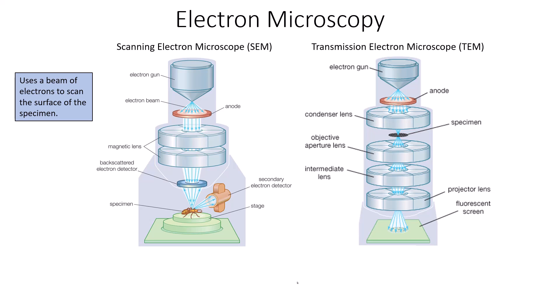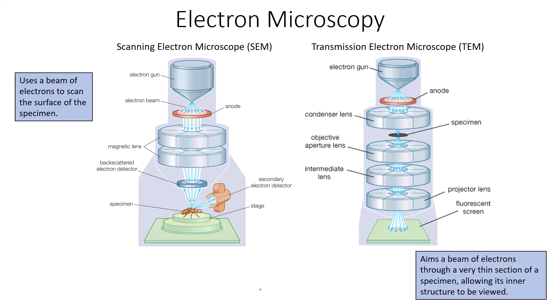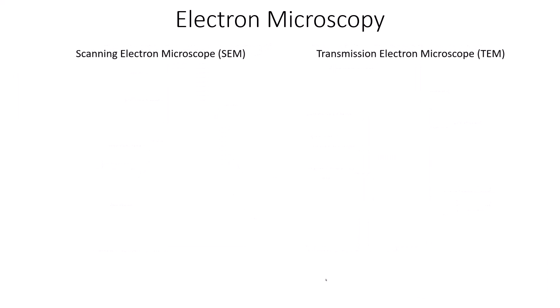The scanning electron microscope uses a beam of electrons to scan the surface of the specimen, while the transmission electron microscope aims that beam of electrons at a very thin section of a specimen. Those electrons pass through the specimen so that the inner structure can be viewed.